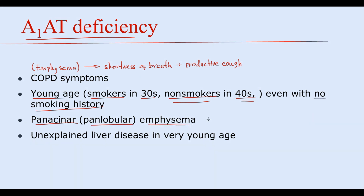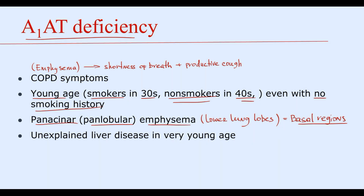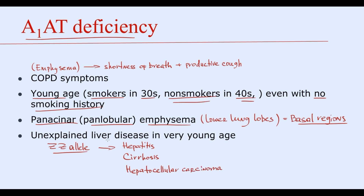Panacinar emphysema involves predominantly the lower lung lobes in the basal regions of the lung. By contrast, smoking-induced emphysema involves predominantly the upper lobes and is called centrilobular emphysema — this distinction helps in differential diagnosis. Also keep in mind that with the ZZ allele, patients can have hepatitis, cirrhosis, or even hepatocellular carcinoma at a very young age.